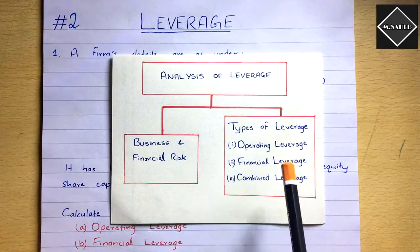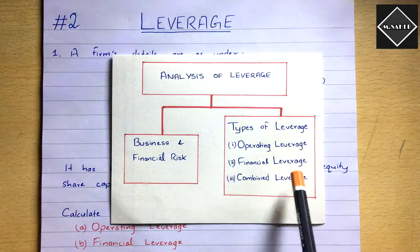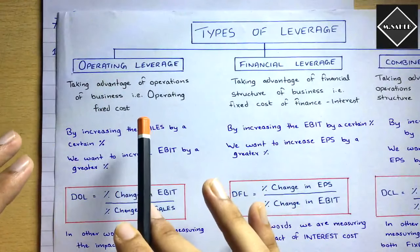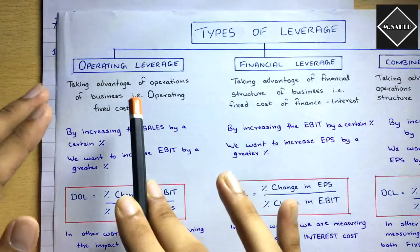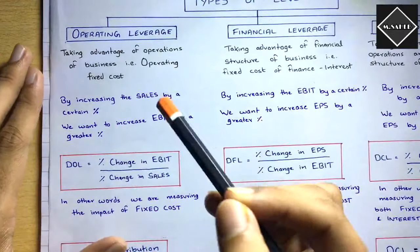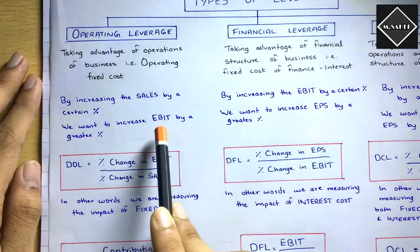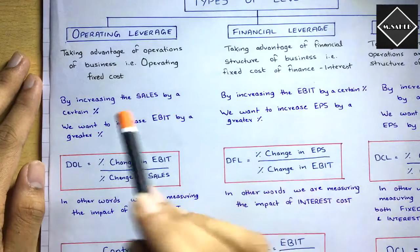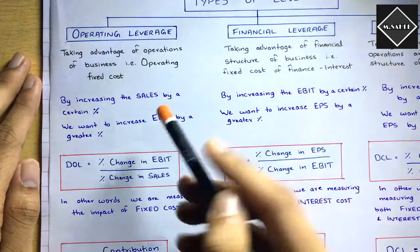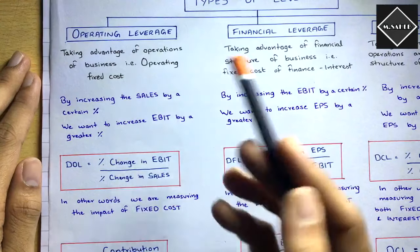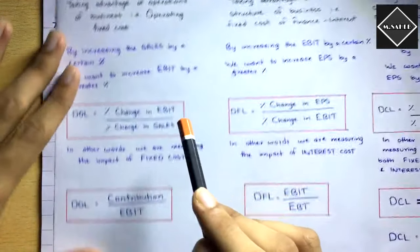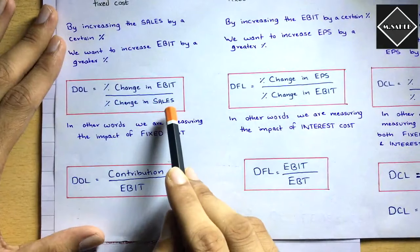We also saw what is meant by operating leverage and financial leverage. Operating leverage means taking advantage of the operations of the business — due to operating fixed cost, how the business benefits. By increasing sales by a certain percentage, we want to see how EBIT increases. If sales increases by one percent, what percentage change will there be in EBIT? That is what operating leverage measures. The formula is: percentage change in EBIT divided by percentage change in sales.